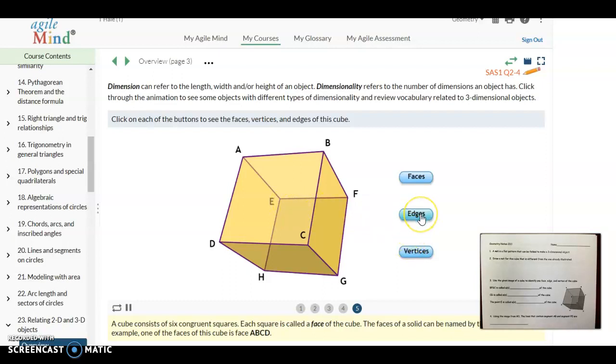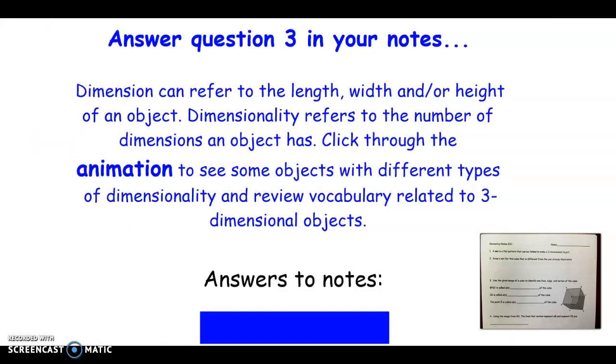The edges are where two faces come together. And so those are those segments that you can see highlighted here. There's four at the top, there's four at the bottom, and there's four along the sides. And so there are 12 total edges for this cube. The vertices are the points where the edges come together. And so you can see that we have a total of eight vertices in a cube. Four on the top and four at the bottom.